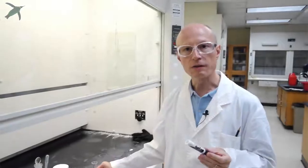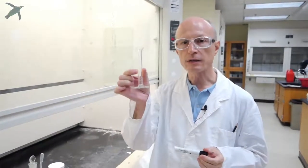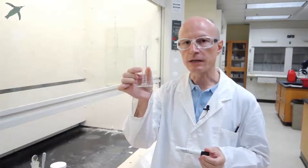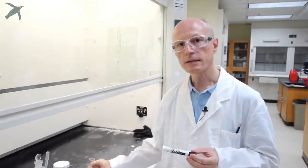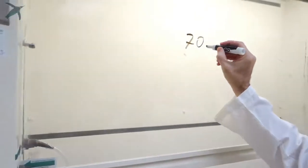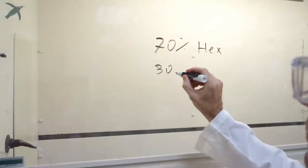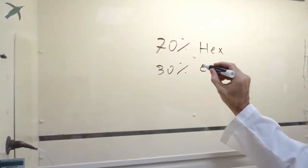How do you make the solvent for your TLC chamber? You want to use a 10 milliliter graduated cylinder, and let's say you need to make 70% hexane, 30% ethyl acetate.